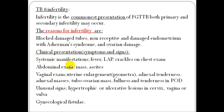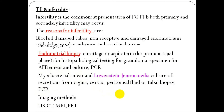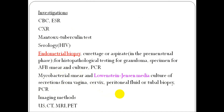Clinical presentation includes systemic manifestations such as fever, lymphadenopathy, and crackles on chest examination. Abdominal examination may reveal a mass, ascites, uterine enlargement, pyometra, adnexal tenderness, and features of PID. Investigations include: complete blood count, ESR, chest X-ray, Mantoux tuberculin test, serological HIV test, endometrium biopsy and curettage or aspiration in the premenstrual phase for histopathological testing for granuloma, and specimens for AFB smear, culture, and PCR.